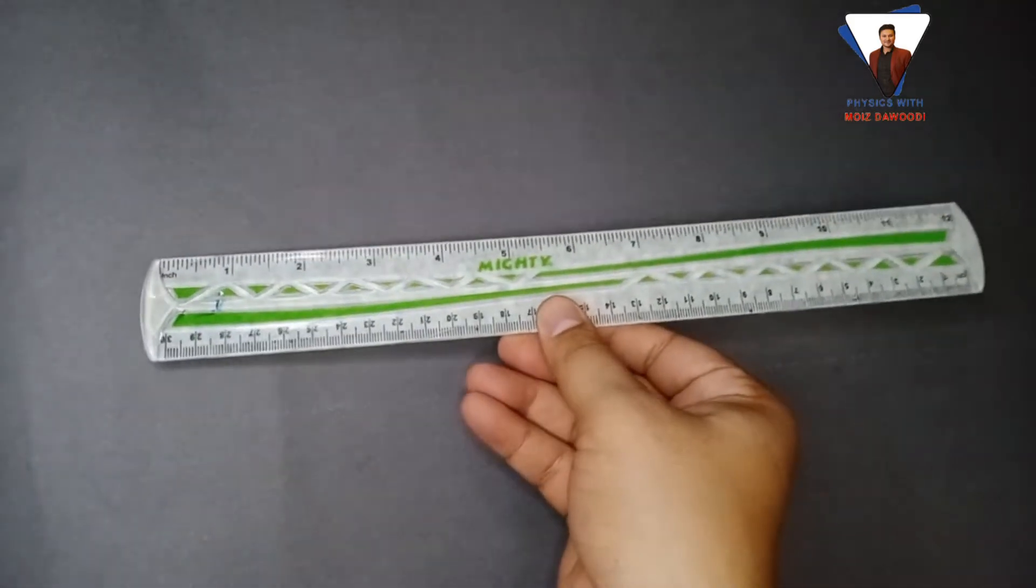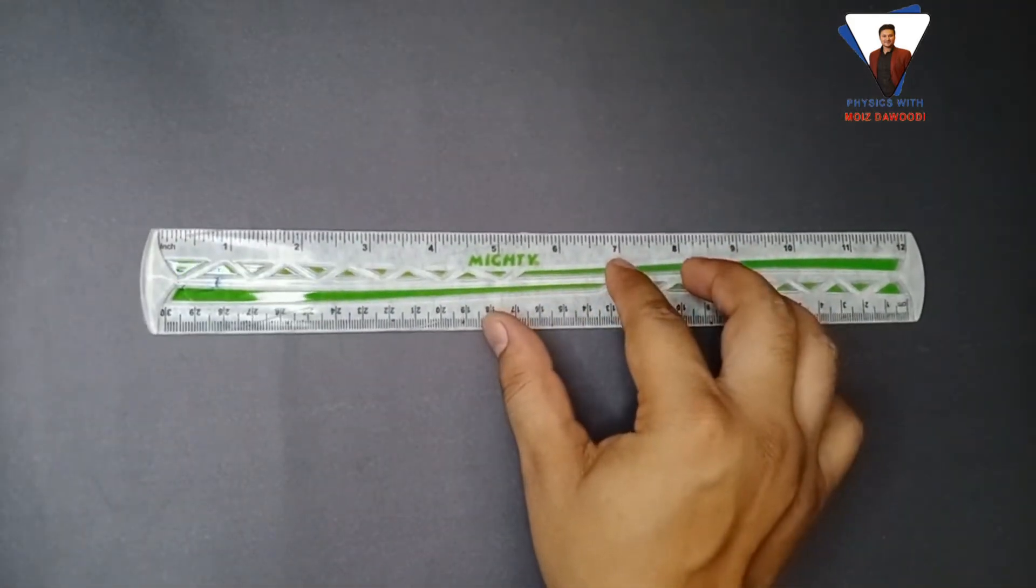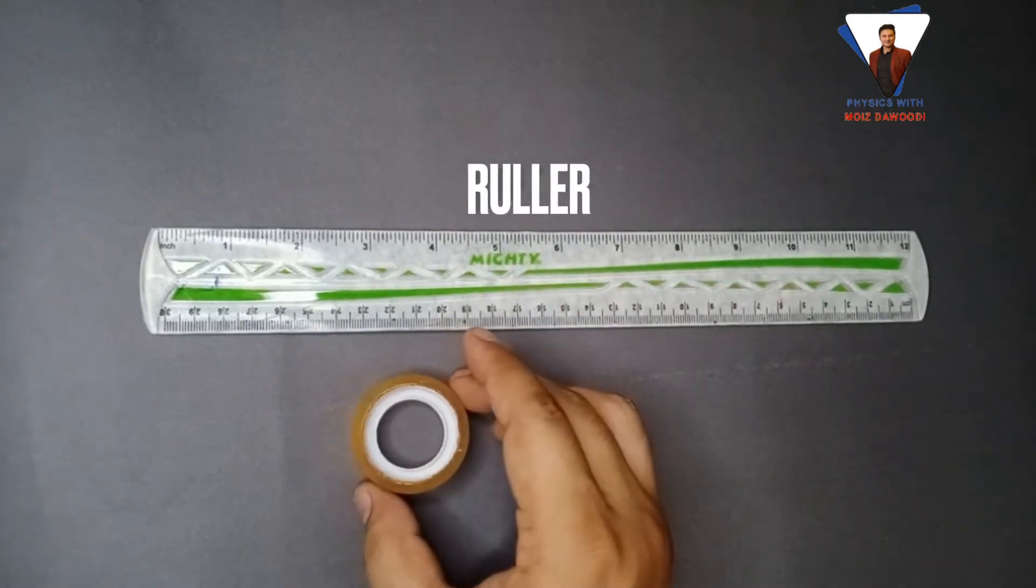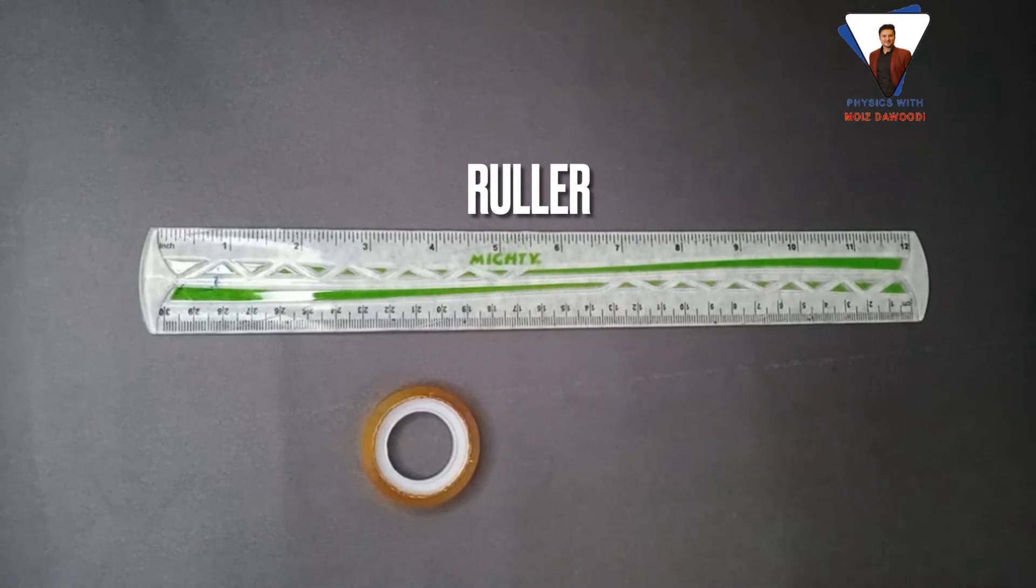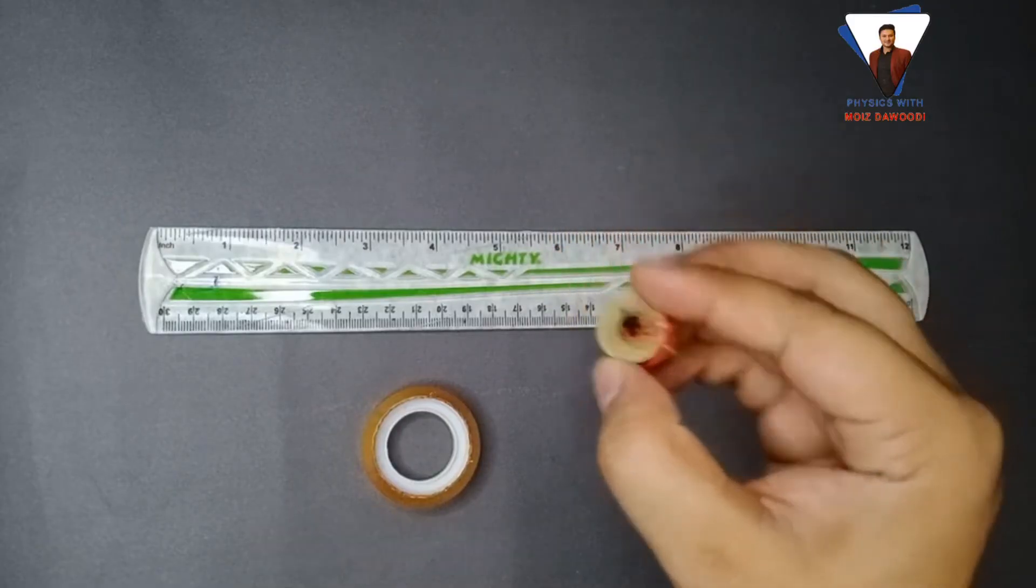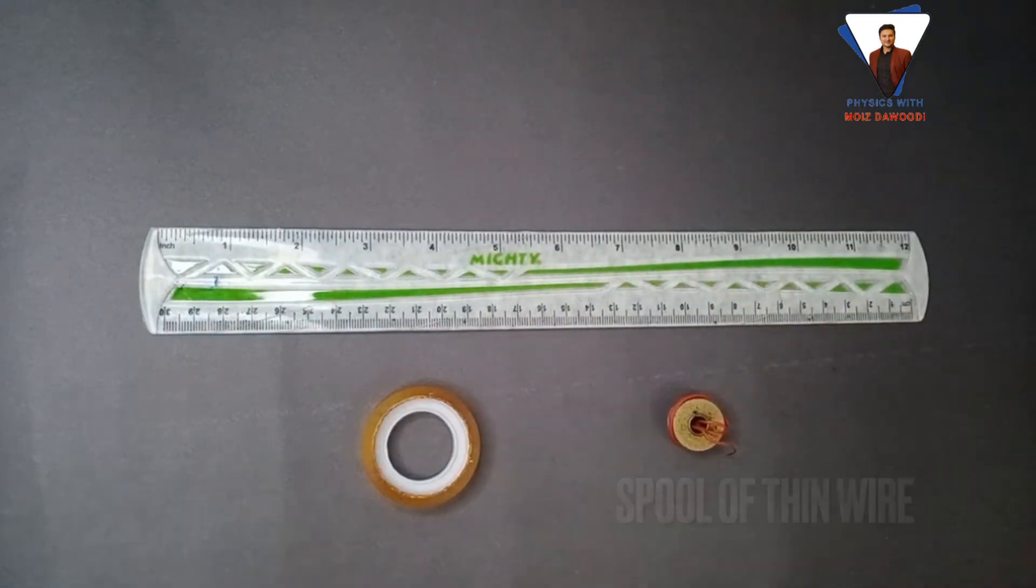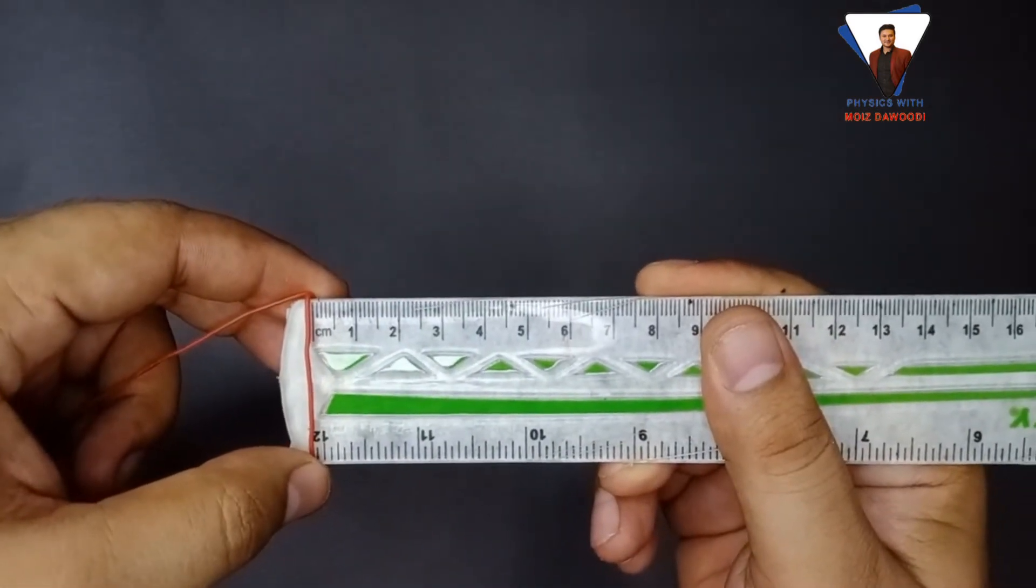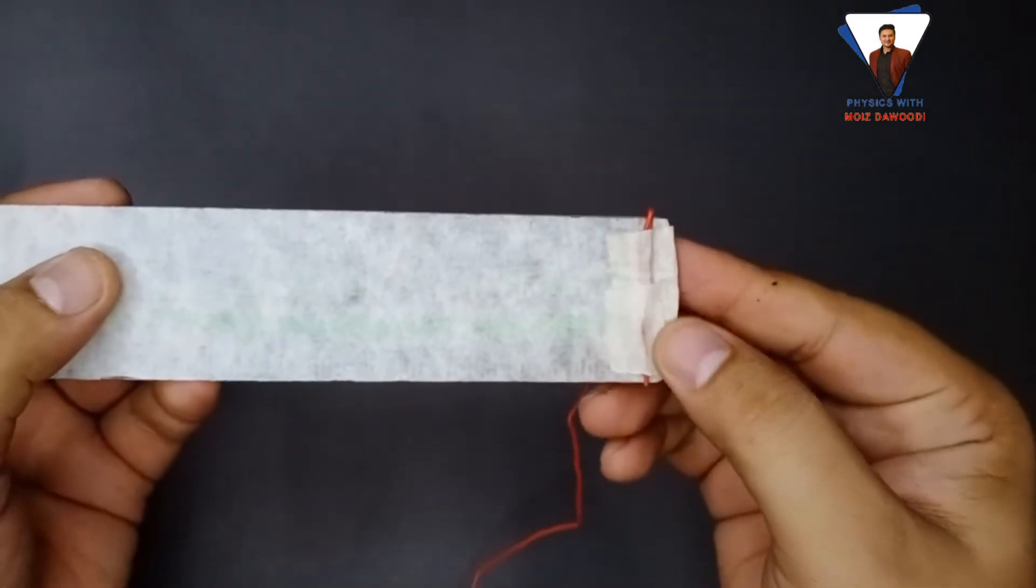So in order to find out the diameter of thin wire according to the question, we have a set of apparatus—that is a ruler. Here, instead of blue tack, I'm using squash tape or a paper tape and a thin spool of wire. Now in order to find out the diameter, first we need to fix one end of the wire over the ruler like this.